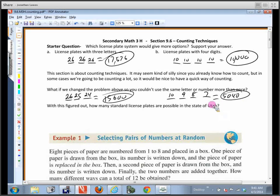All right, so with this figured out, how many standard license plates are possible in the state of Utah? So how does Utah do theirs? Three numbers and three letters. Now here's the interesting thing: has anybody seen the old style of license plates, those black ones that they used to have years ago?